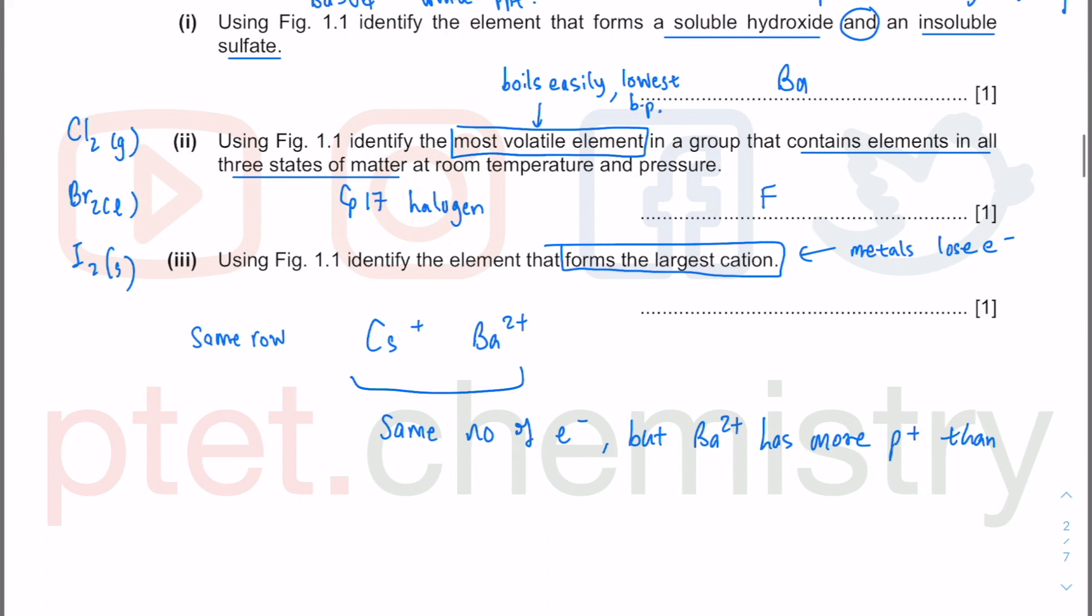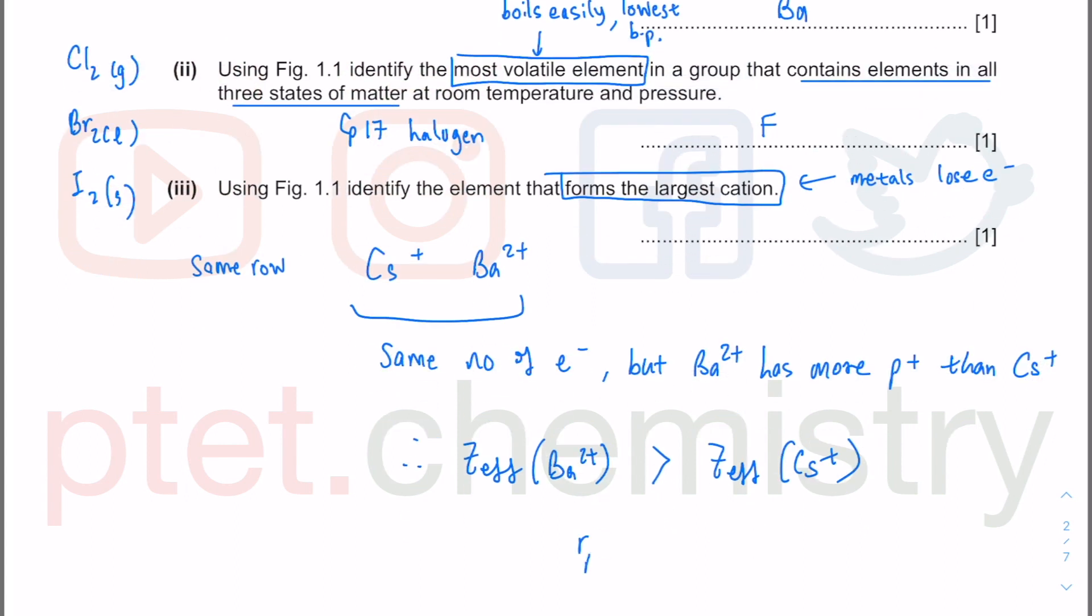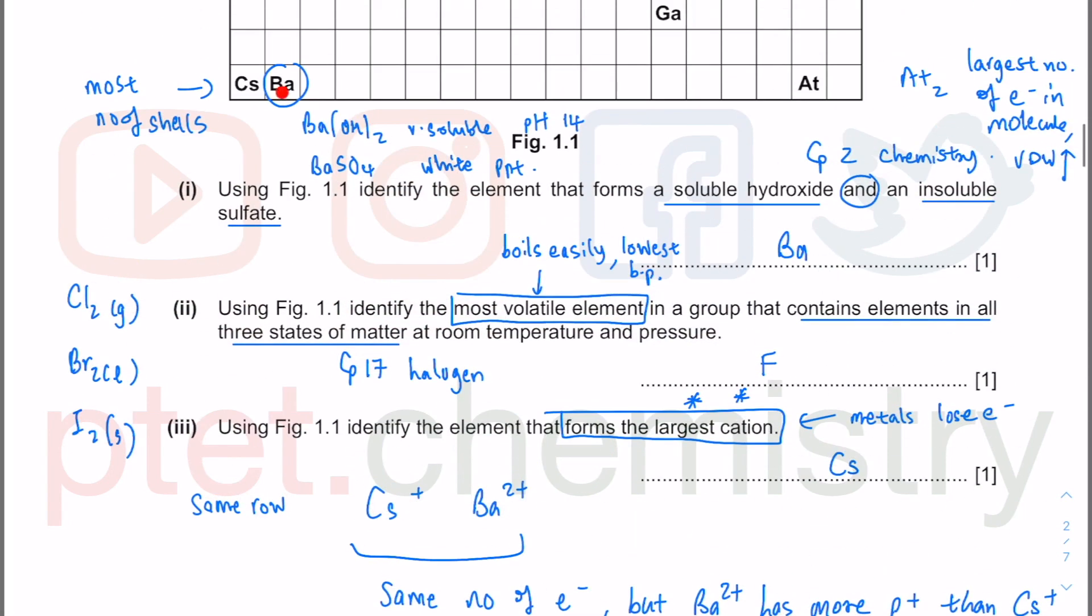barium comes after cesium. So it has more protons. You have greater nuclear charge. Your shielding is roughly the same. So therefore, we can talk about the net nuclear charge. The effect, the net electrostatic force of attraction between the protons in the nucleus here, is going to attract electrons a bit stronger compared to cesium. And if you attract the outer shell electrons a bit stronger, your size is going to be a bit smaller. So the ionic radius is going to be a bit smaller for the Ba2+ compared to the cesium plus. So you want the largest and you want the cation? We're looking at cesium instead of barium as the element itself there.